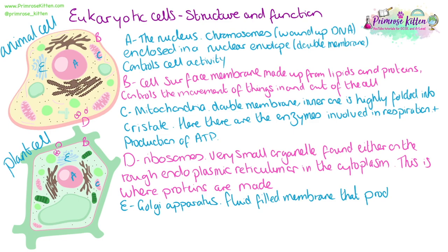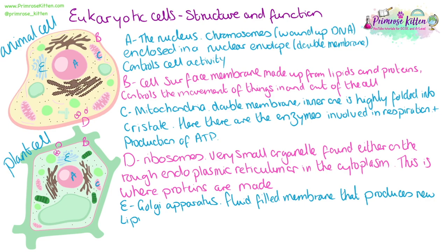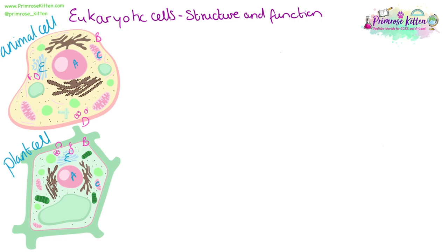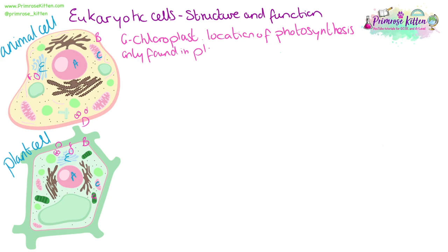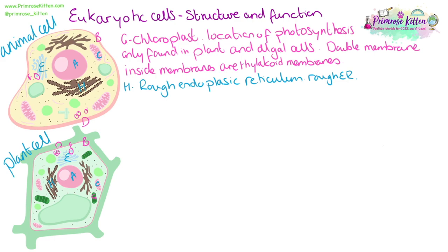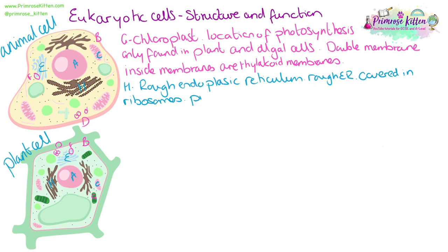Both animal cells and plant cells have a Golgi apparatus — a fluid-filled membrane that produces new lipids and new proteins. Budding off from the Golgi apparatus are Golgi vesicles, which store and transport the new lipids and proteins. The green chloroplasts are the location of photosynthesis, with a double membrane and internal thylakoid membranes. Both animal and plant cells will have a rough endoplasmic reticulum, which is covered in ribosomes.